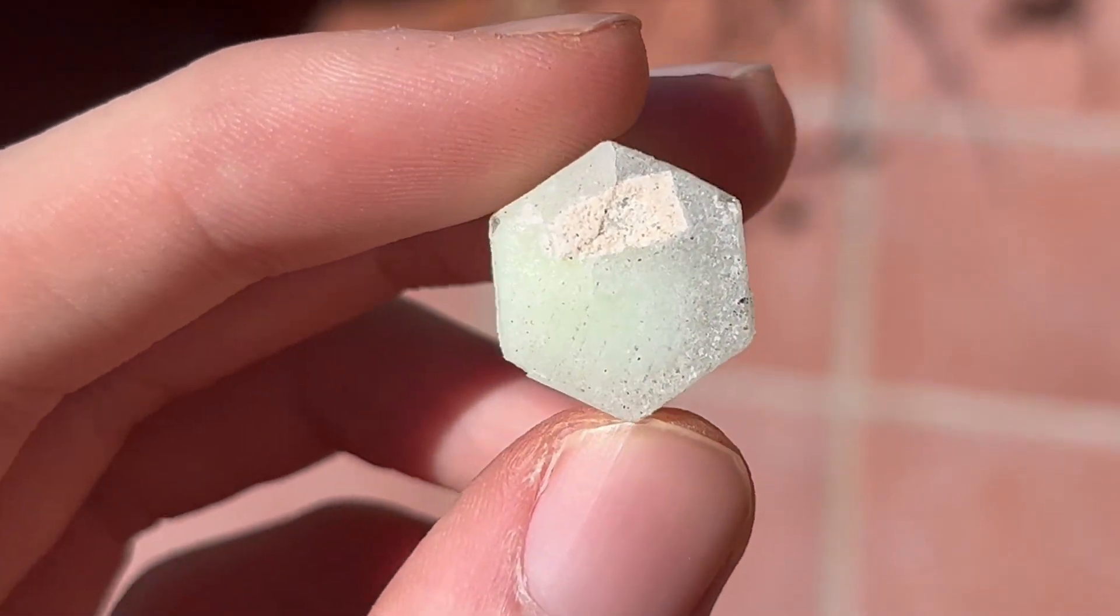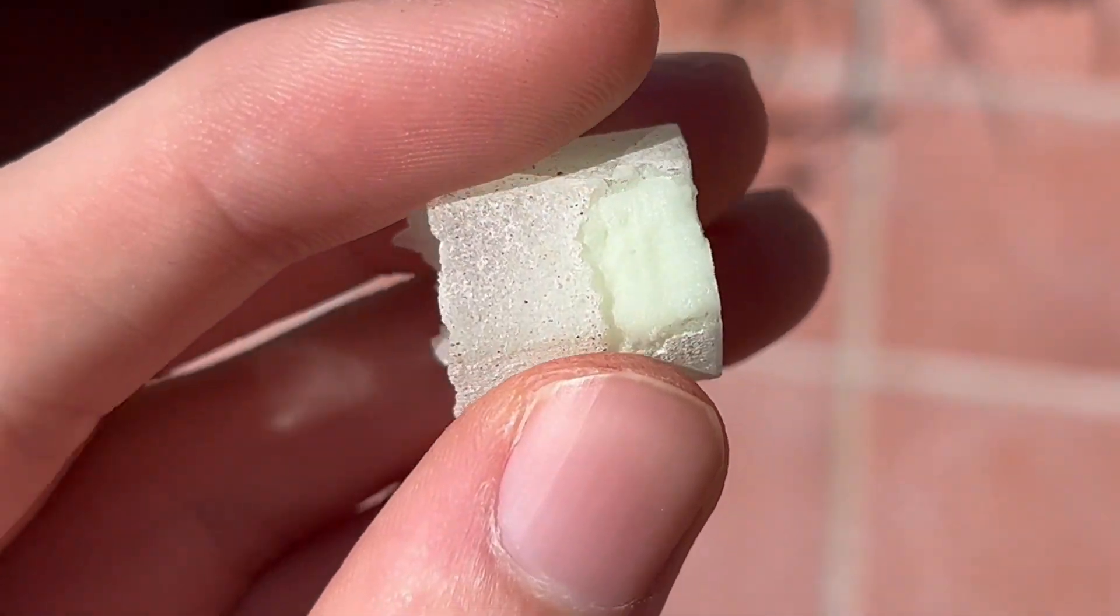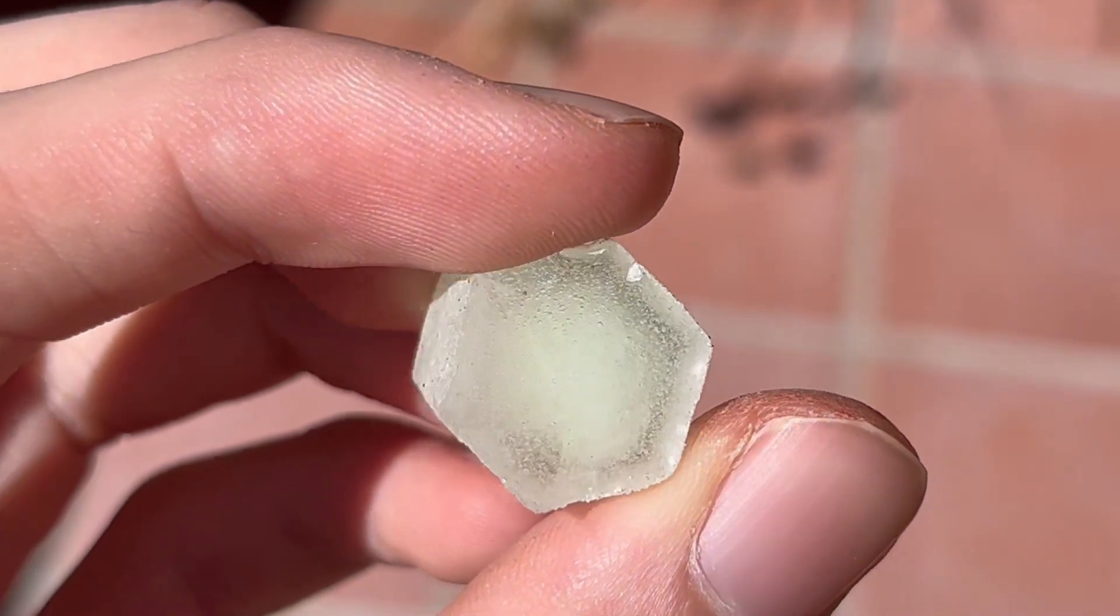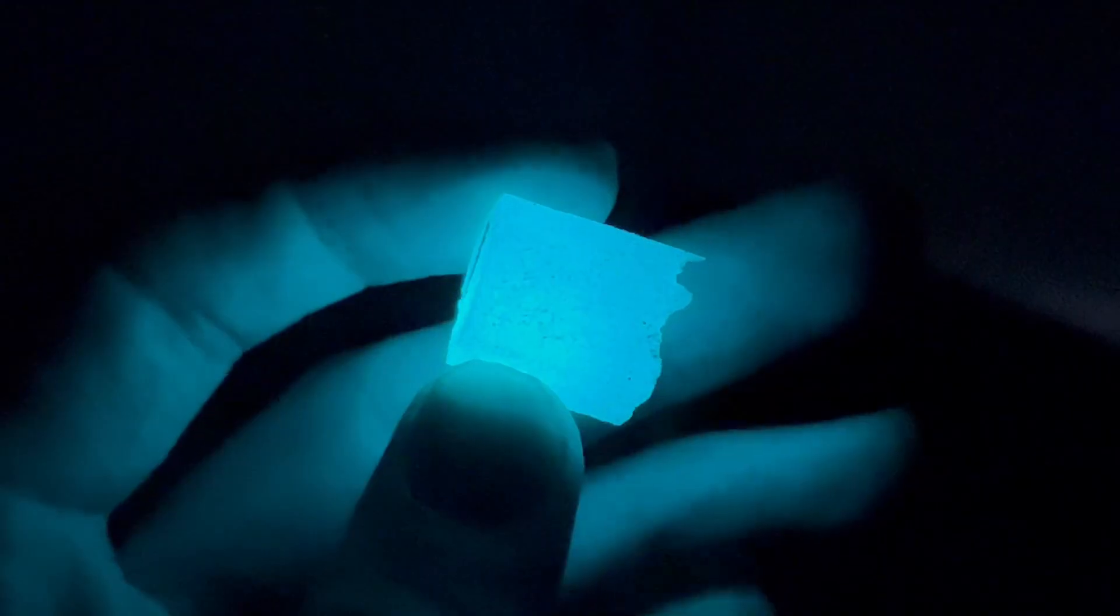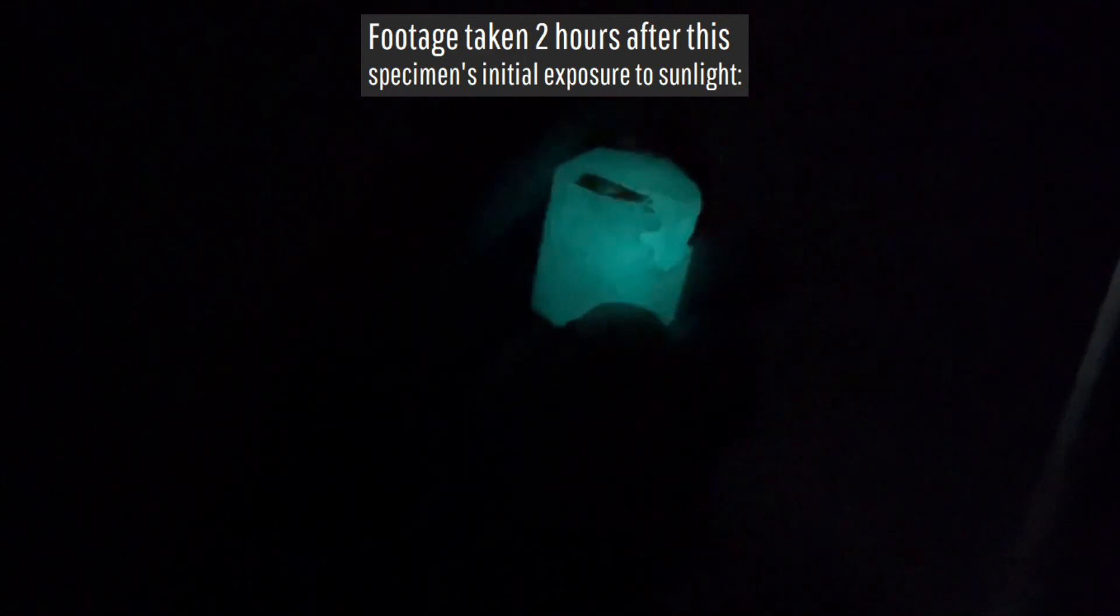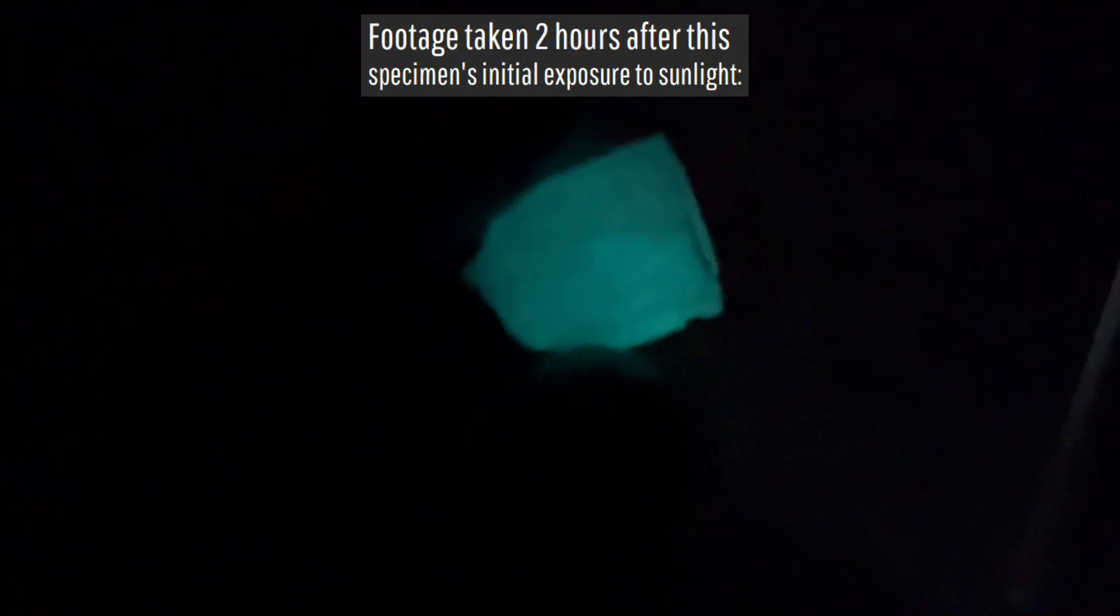Strontium aluminate is so phosphorescent that simply bringing this specimen outside in sunlight during a UV index of 6 for 30 seconds caused it to immensely glow thereafter, and continue to glow at a lesser extent 2 hours after the initial exposure to sunlight.